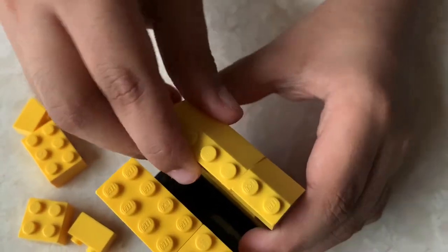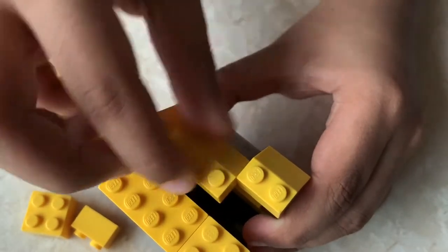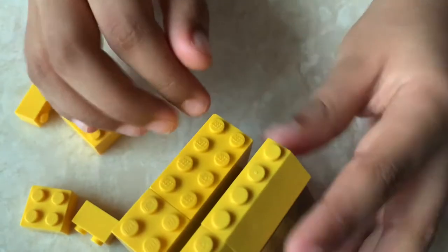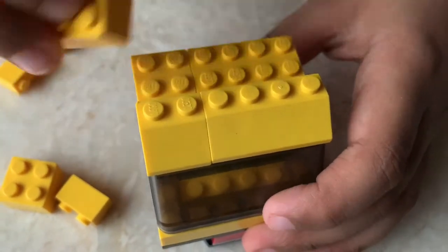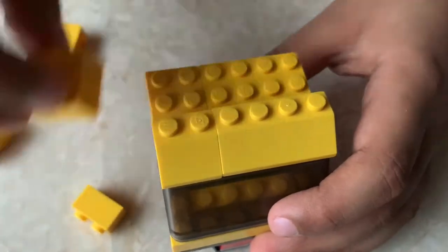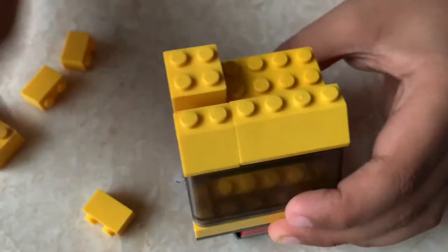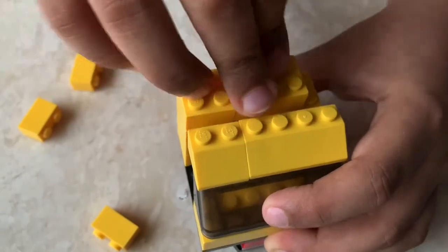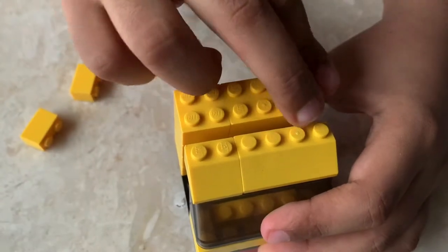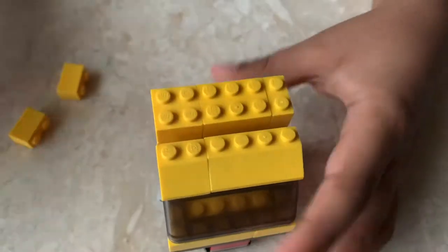If you want, you can place it like this or you can also put it back, which is what I prefer here. Now let's take this 2x2 brick, this 2x6 brick, and this 2x1 brick and put it like that.